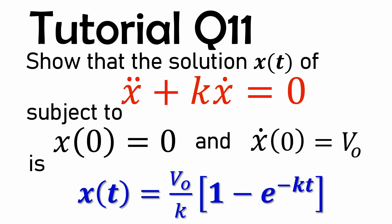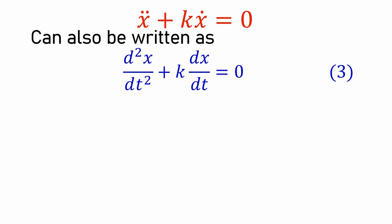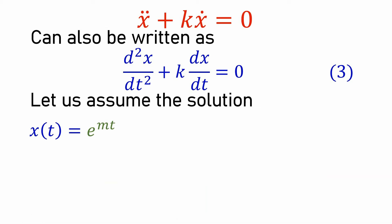Let's start this problem. We can rewrite it because x-double-dot means the second derivative of x with respect to t, and x-dot means dx/dt, which is equation 3 in our lecture notes. To solve equation 3, we are going to assume a solution, and that solution is x(t) = e^(mt).